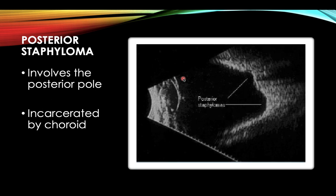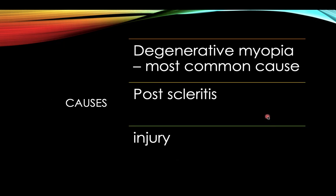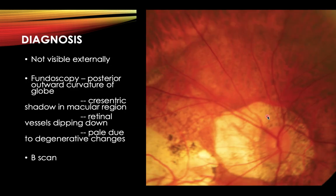The fifth type is posterior staphyloma, involving the posterior pole of the eye, incarcerated by the choroid. A B-scan image can show the posterior staphyloma. The most common cause is degenerative myopia; posterior scleritis or injury can also cause it. It is not visible externally.